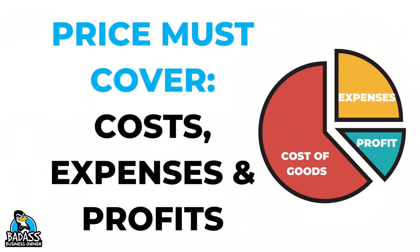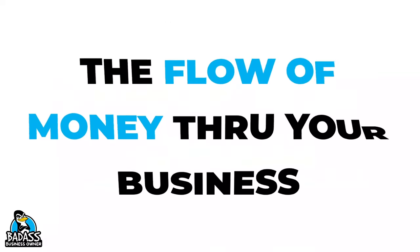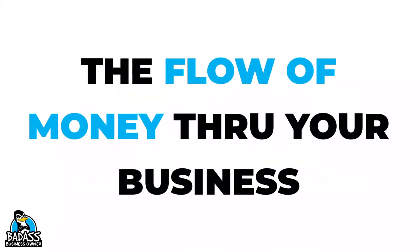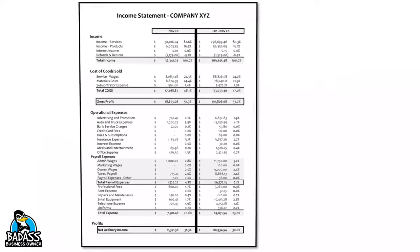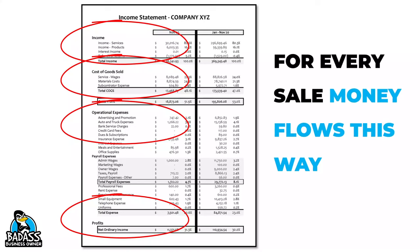The third reason small business owners mess up their pricing is they fail to ensure that the sales price covers their cost of goods, their expenses, and their desired profits. The number one calculation to memorize is: sales minus cost of goods minus expenses equals profit. This mirrors the way money flows through your business and the way your profit and loss statement is structured — sales on top, then cost of goods, then operational expenses, and finally net income. For every sale, you have to make sure you are collecting money to cover all of these costs, expenses, and ensure a profit.